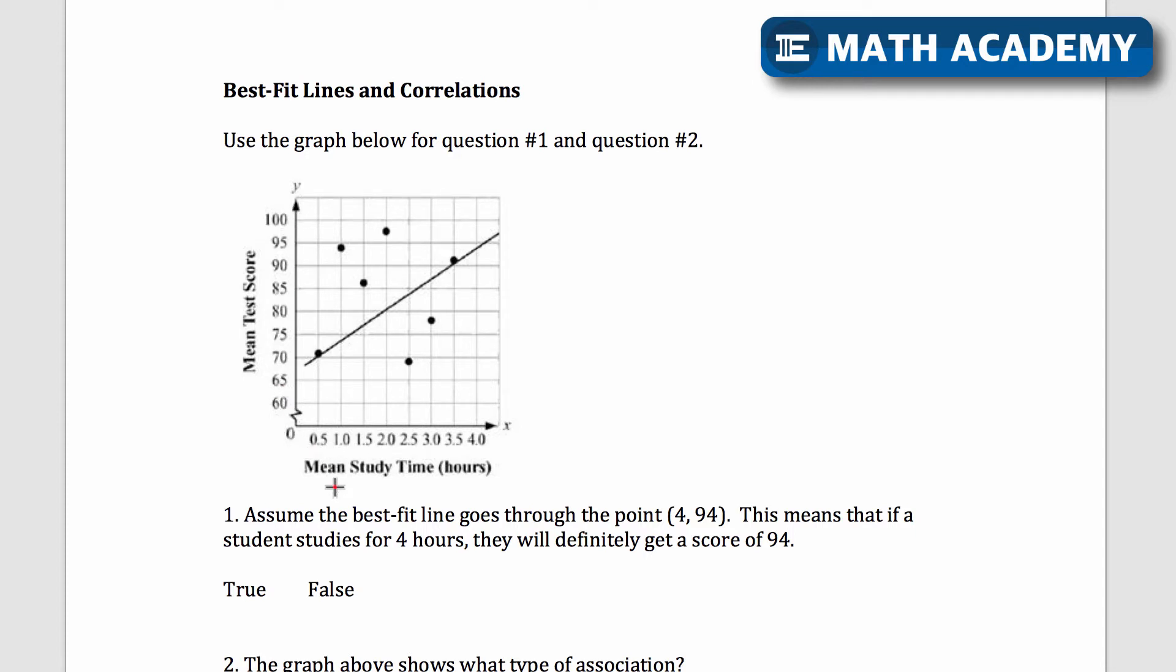Sometimes they do some tricky things with the scale here. The x-axis is mean study time in hours, so someone's studying something for some number of hours and it goes up by 0.5. It's not 1, 2, 3, it's 0.5, 1, 1.5. The y-axis is mean test score, so it's saying what would be the average test score based on the average number of hours studied.